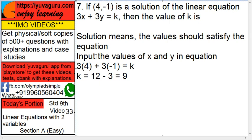So what we can do is, it's already given that it's a solution. So we'll input the values of 4 and minus 1 in this equation. So we get 3 into 4, this 4, plus 3 into minus 1, this minus 1 equals to k.